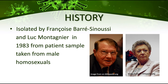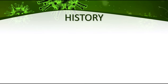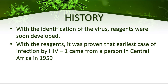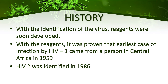It was these two great scientists who discovered HIV, and during that time they knew they had to work fast — similar to what is happening right now with the coronavirus pandemic. After the identification of the virus, reagents were immediately developed to help in the diagnostic processes. And eventually it was proven that the earliest case of infection by HIV-1 came from a person in Central Africa in 1959.